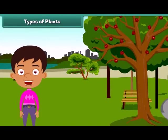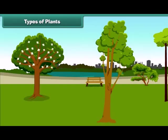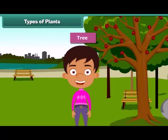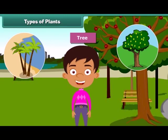Children, we often see different types of plants around us. We find that some plants are tall while some are small. Plants which are very tall and strong are called trees. For example, mango tree, coconut tree, and neem are tall.